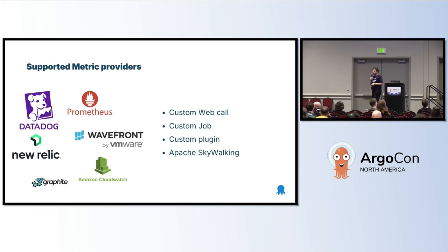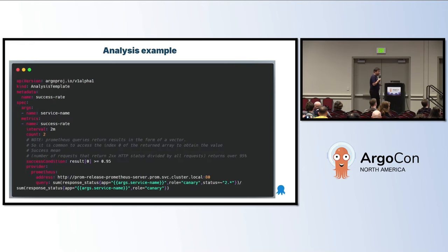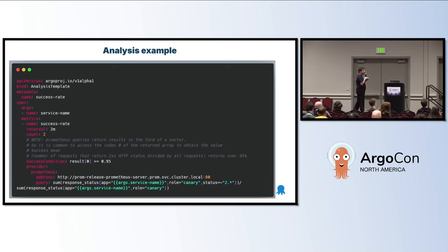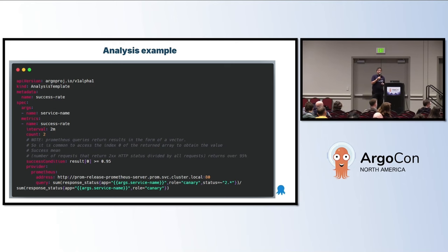Argo Rollouts on its own has support for several metric providers. If your solution is not one of these, you can also do custom stuff — you have the capability to run a custom job that makes the decision for you. There is another resource called an analysis template. In this example, I'm asking my Prometheus instance and saying that for this particular application, success means that 95% of requests return HTTP 200. Argo Rollouts will automatically ask Prometheus whether this is true or not. If it's true, the deployment is successful. If it's false, Argo Rollouts will make the decision to rollback — not a human.